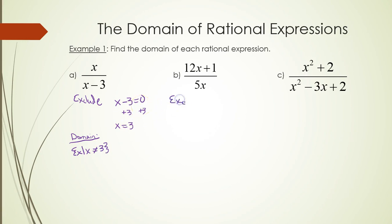Part b, we have to exclude wherever 5x is equal to zero. Since you're multiplying by 5, you divide both sides by 5 and you get zero.